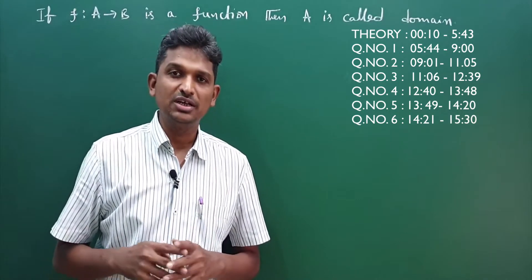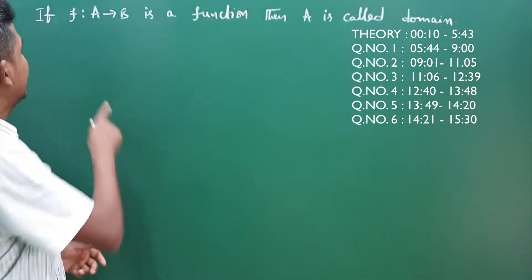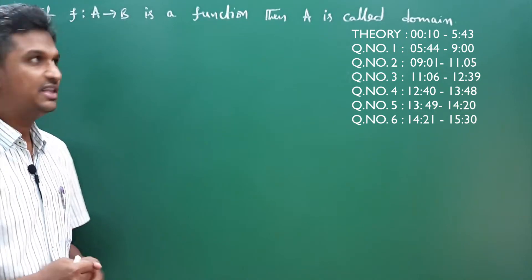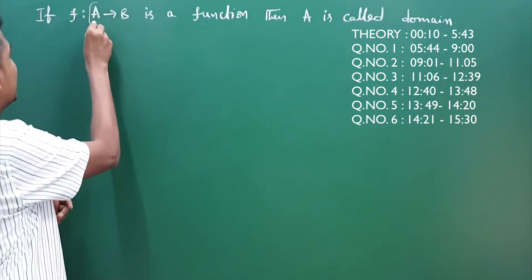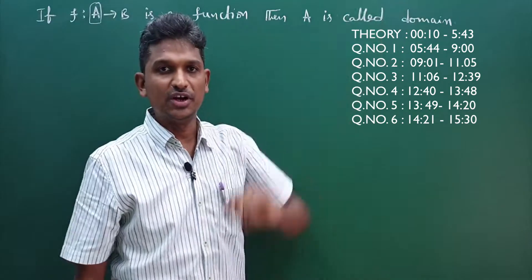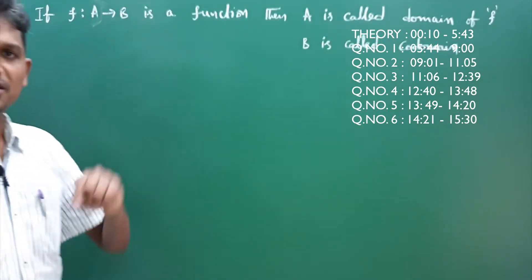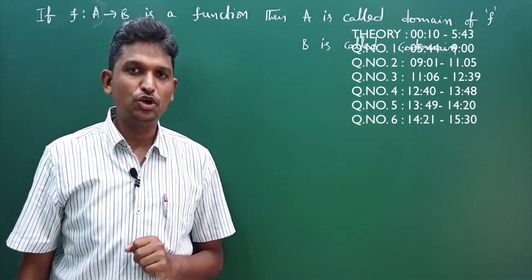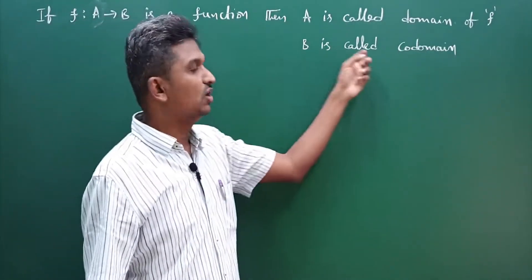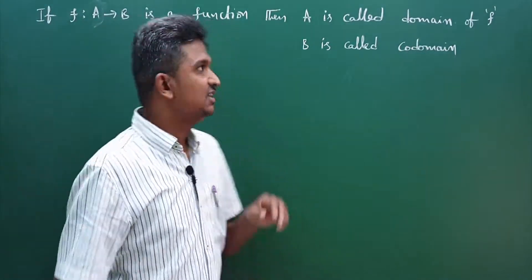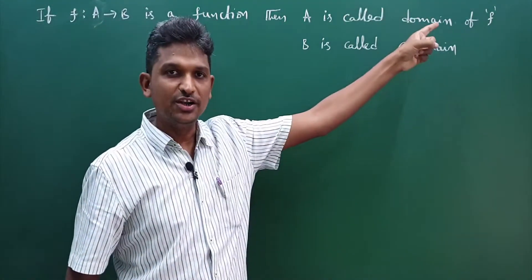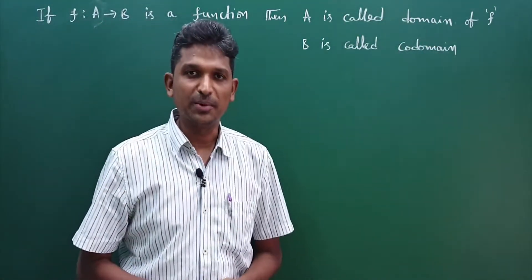As per the textbook, the definition is like this: if f from A to B is a function, then A is called the domain of that function. If f from A to B is a function, A is called domain and B is called codomain.